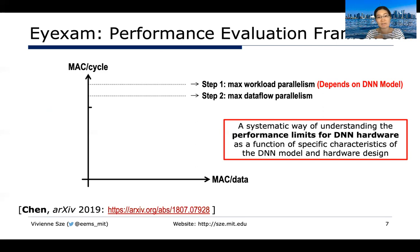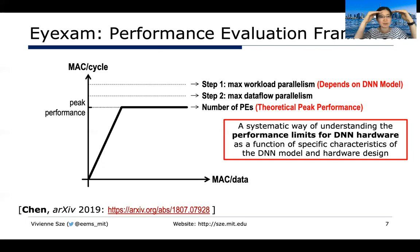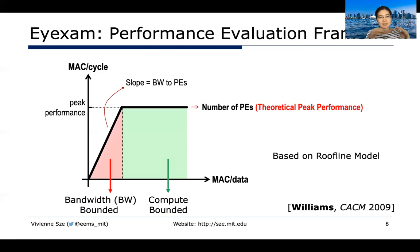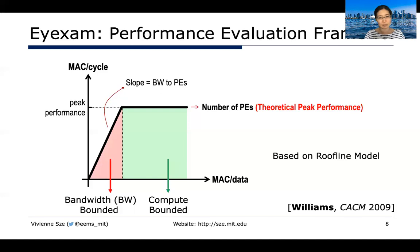The maximum throughput depends on the DNN model and how many MACs can operate in parallel. Depending on the dataflow — for example, which type of data remains stationary — that reduces the amount of parallelism achievable. The number of processing elements physically implemented sets your peak theoretical performance. This is essentially the roofline model developed in 2009, widely used in computer architecture. If you can do a lot of operations per piece of data, you're compute-bound; if you can only do very few MAC operations per piece of data, you're bandwidth-bound.